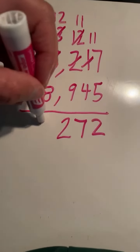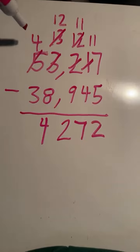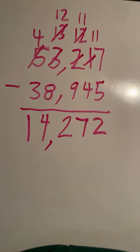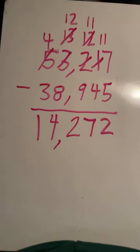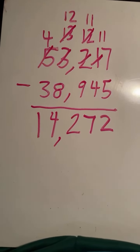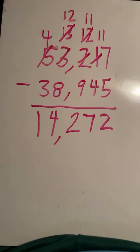12 minus 8 equals 4. 4 minus 3 equals 1. And we have our final answer. 53,217 minus 38,945 equals 14,272.